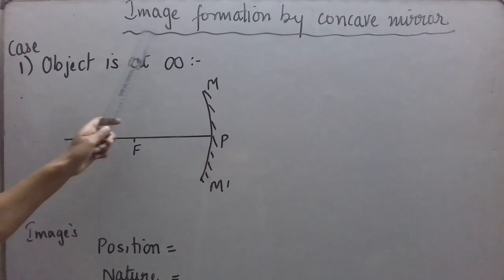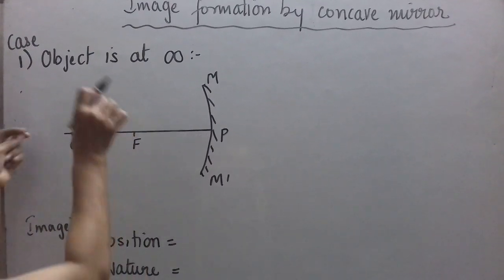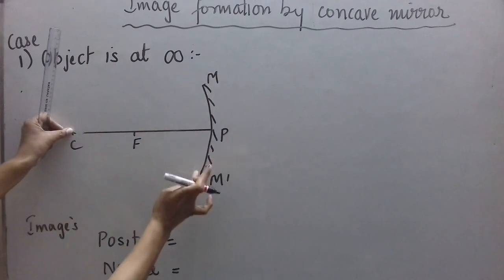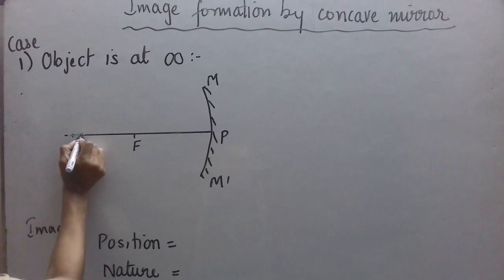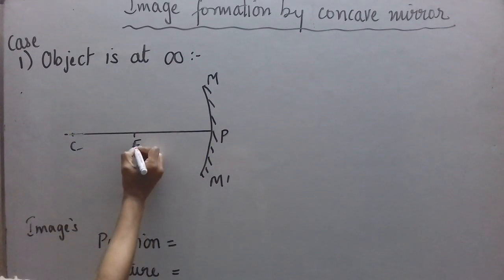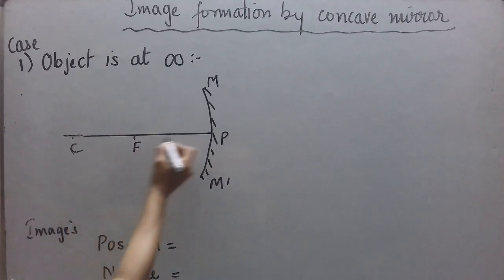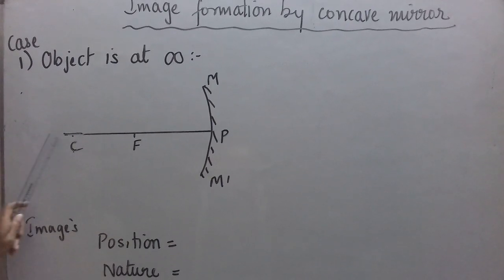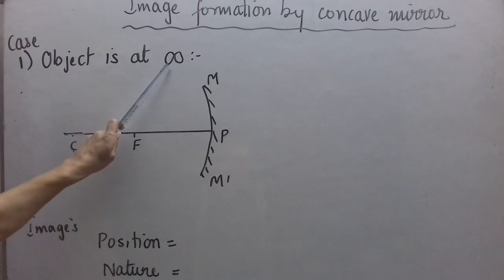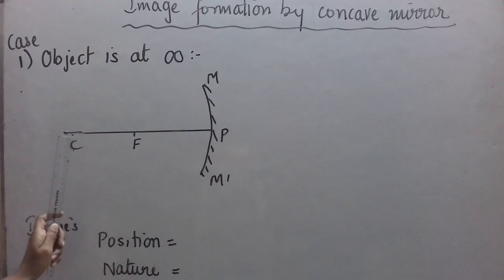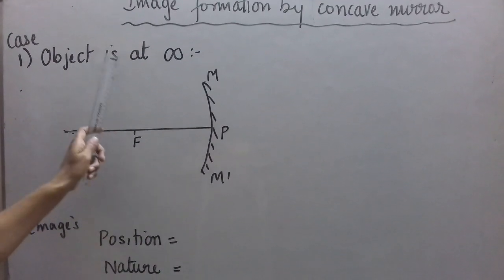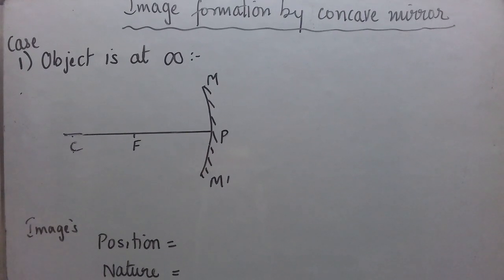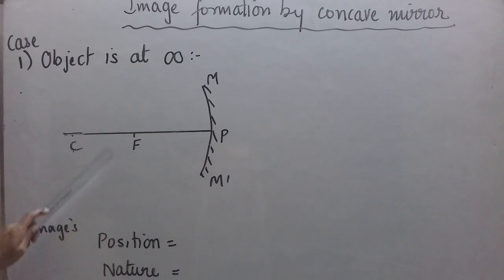Now let us see image formation by concave mirror. We take a compass, place the tip at C, open it wide and draw the curve such that the aperture MM' is smaller than CP. Then we draw the principal axis, take the midpoint as F, and label C, F, P, and MM'. Now let us consider Case 1: when the object is at infinity. Infinity means the distance is much larger than the radius of curvature, so we consider the object to be at infinity.